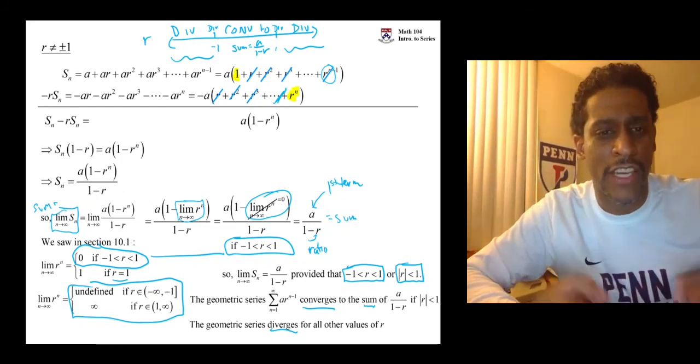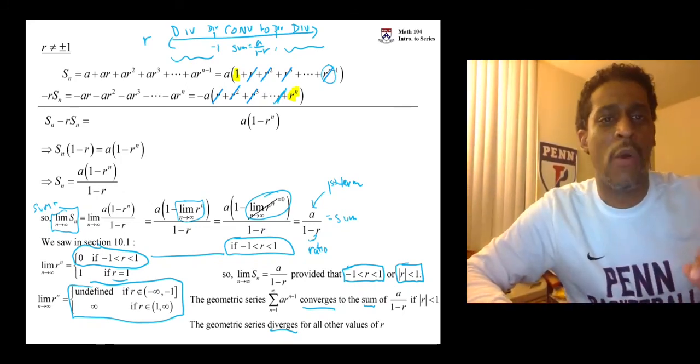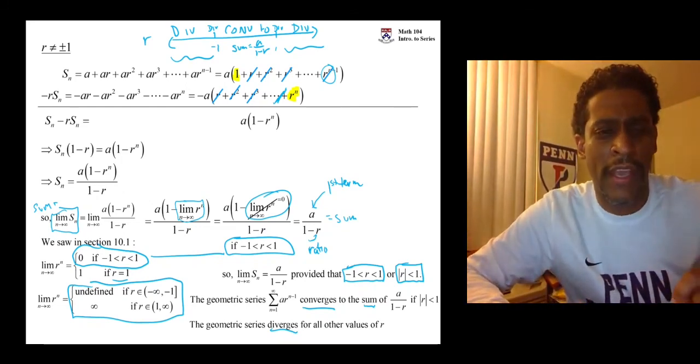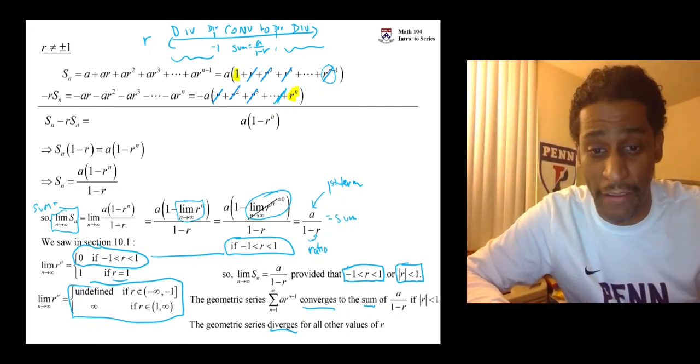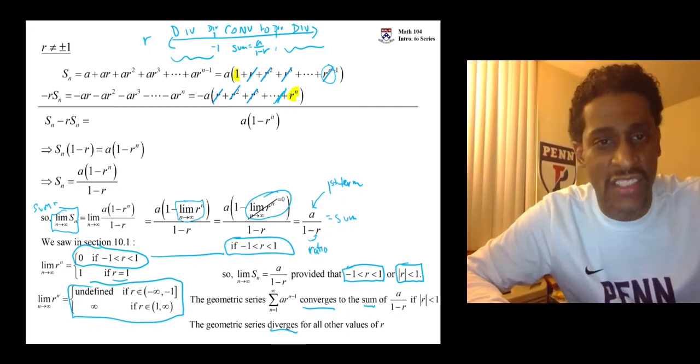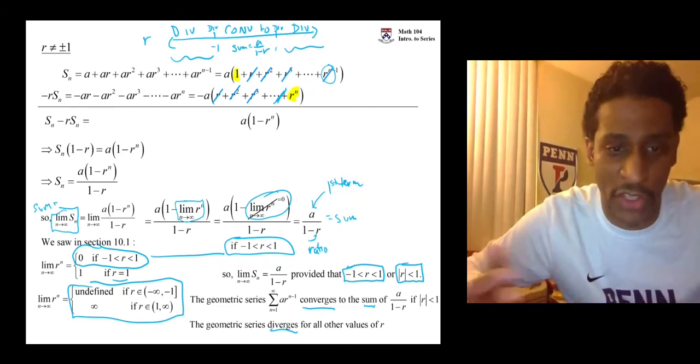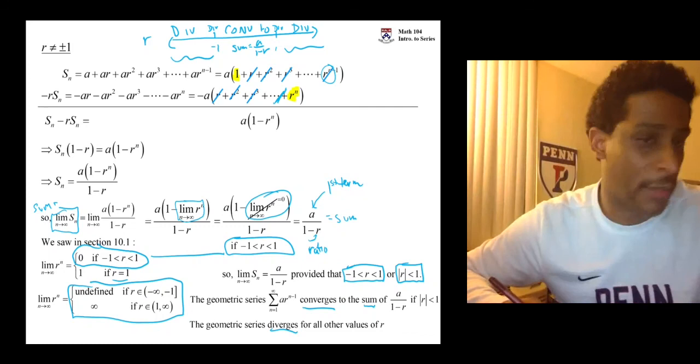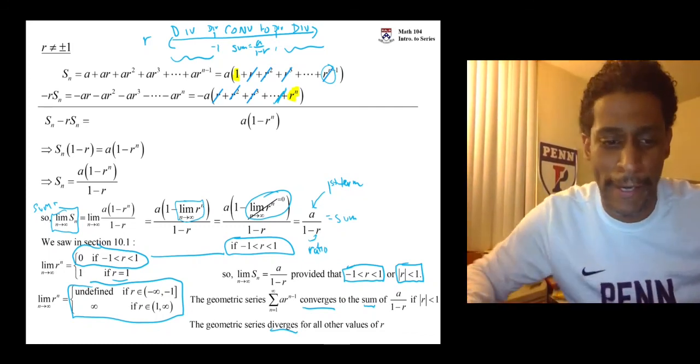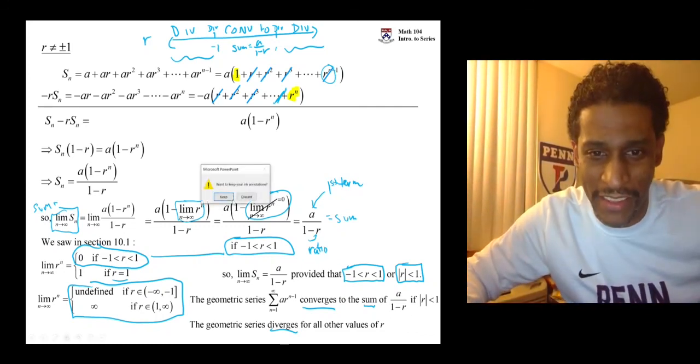So that's just a short video just explaining what a geometric series is and when to know whether it converges or diverges. In the next series of videos, we'll look at maybe three or four different examples of geometric series. Some that converge, some that diverge, and that'll be it. All right. Thanks.